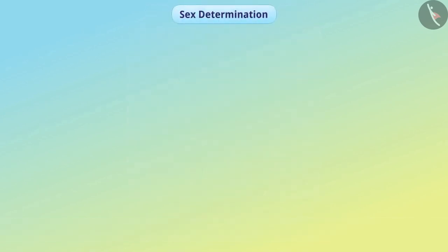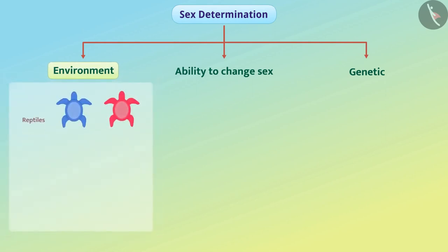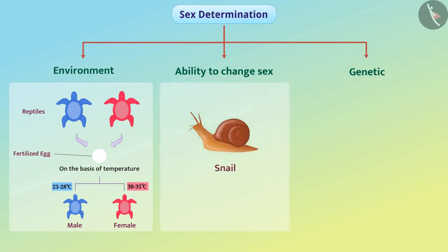The sex determination of an organism depends on various factors. In some organisms, sex determination depends on the environment. For example, in some animals like reptiles, the temperature at which the fertilized egg is kept determines whether the offspring will be male or female. Some animals such as snails may also change their sex.